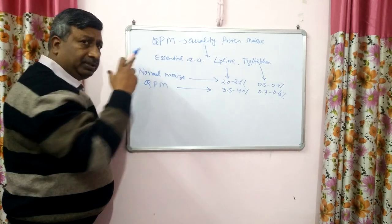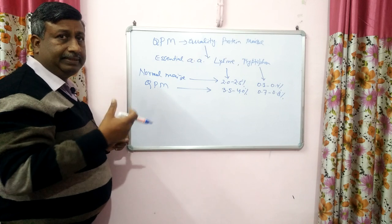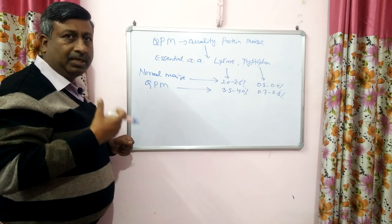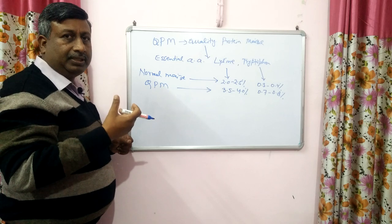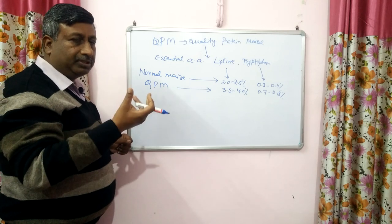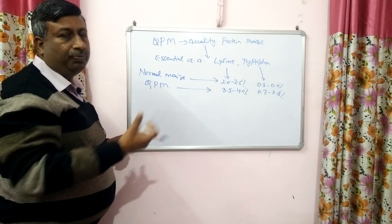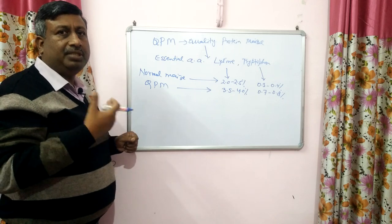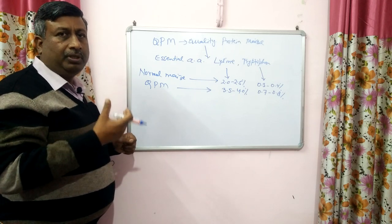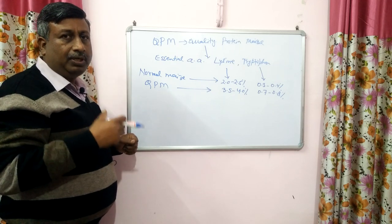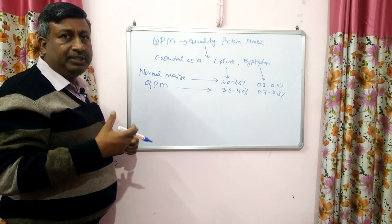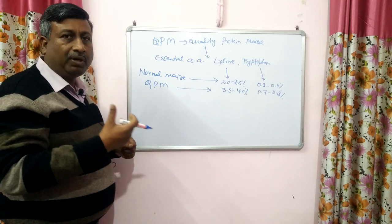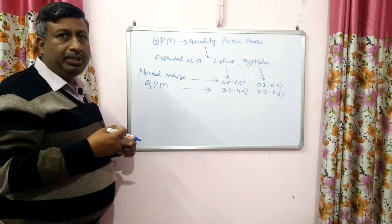Essential amino acids are not synthesized in our body, so their supply is totally dependent on food. We have to take these 8 amino acids from food. Now, what is the importance of amino acids? Amino acids are required for protein synthesis.